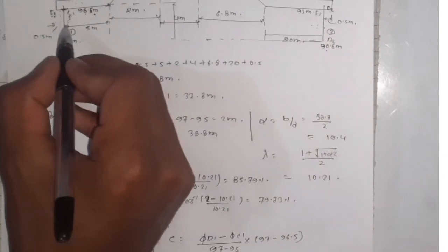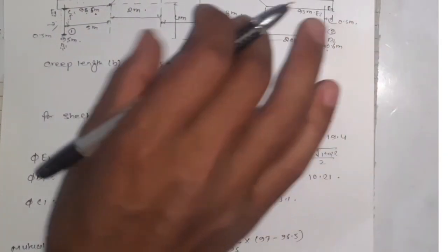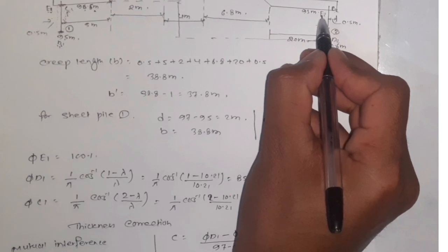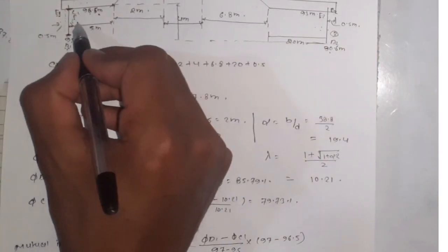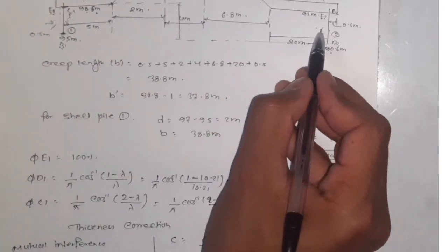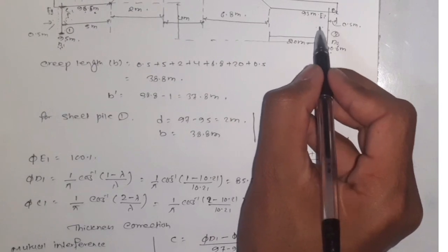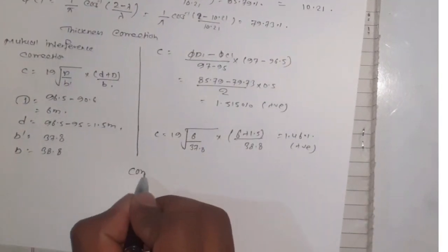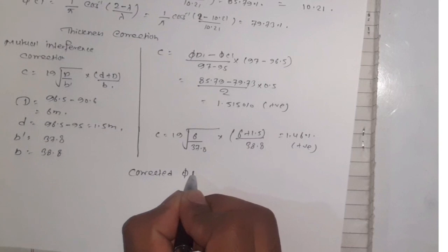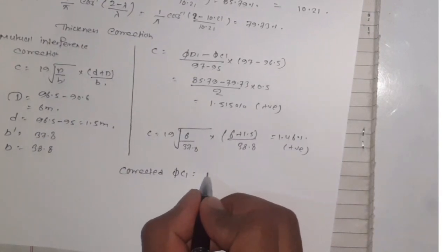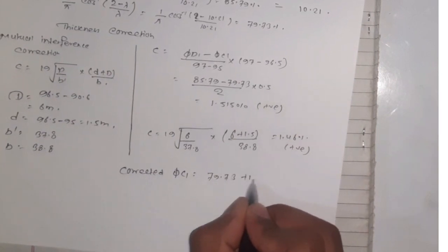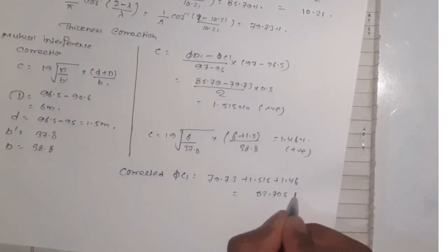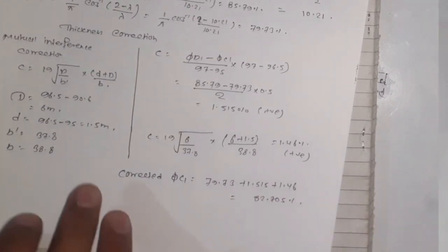For mutual interference, the sign convention is positive when we have sheet pile 2 interfering with sheet pile 1. So corrected phi C1 equals 79.73 plus 1.515 plus 1.46, which equals 82.705 percent.